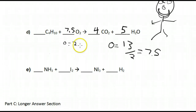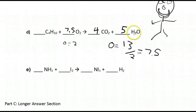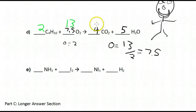Before you panic — yes, you can use 7.5 temporarily. What we do next is multiply everything by two to get whole numbers. Multiplying 7.5 by two gives 13, and we apply that factor to all coefficients. So this becomes 2, this becomes 13, this becomes 8, and this becomes 10. The equation is balanced: four carbons each side, ten hydrogens each side, thirteen oxygens each side — but now all coefficients are whole numbers.